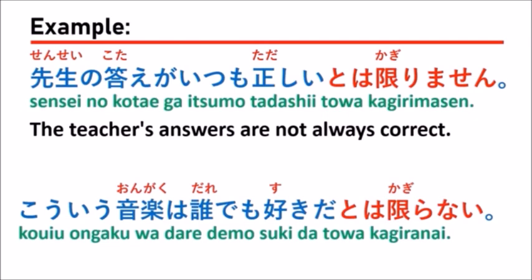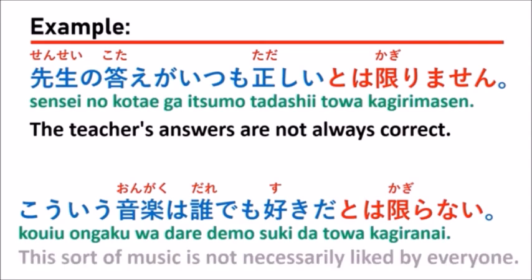こういう音楽は誰でも好きだとは限らない。 Which means: 'This sort of music is not necessarily liked by everyone.'